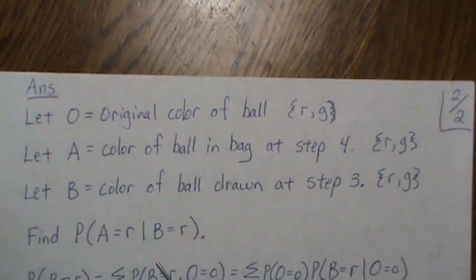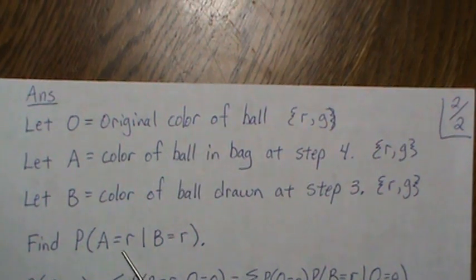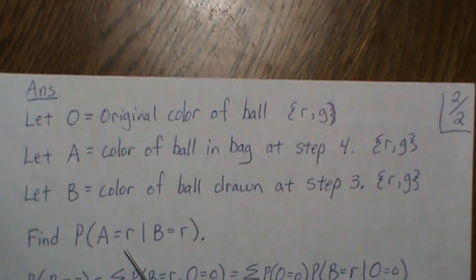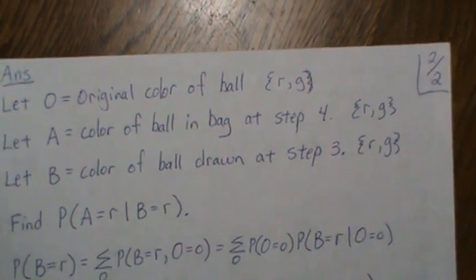But when we go through this exercise of placing a red ball in the bag, and then we happen to draw a red ball, then the probability of a red ball being in the bag is no longer 50-50. It's two thirds, and these are the calculations.